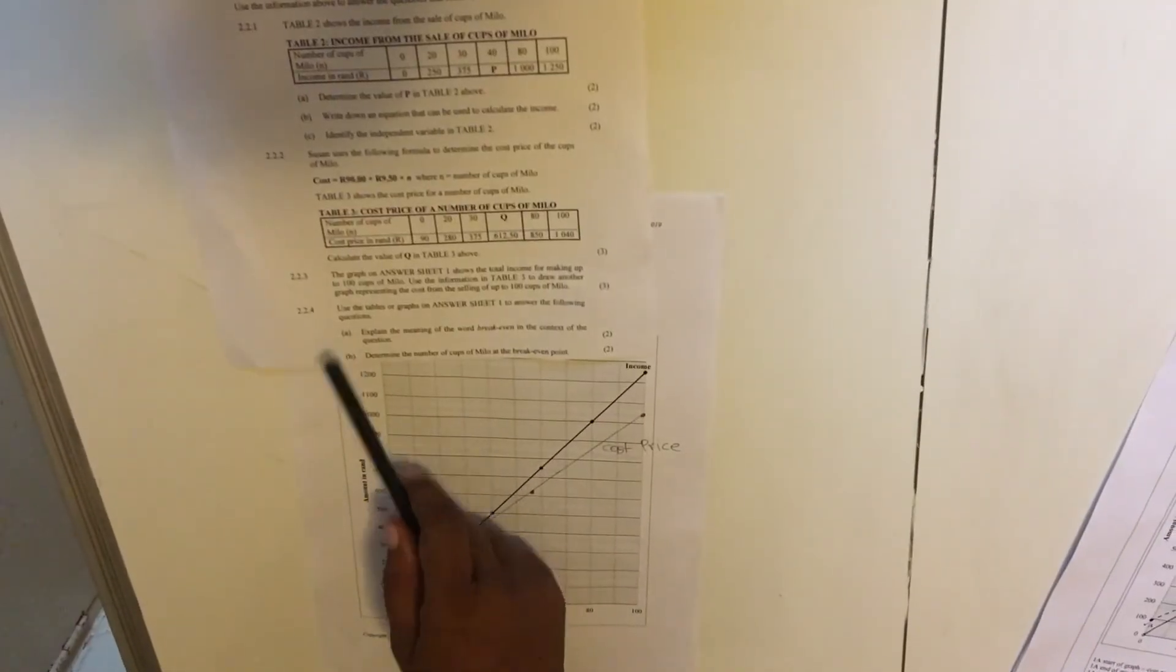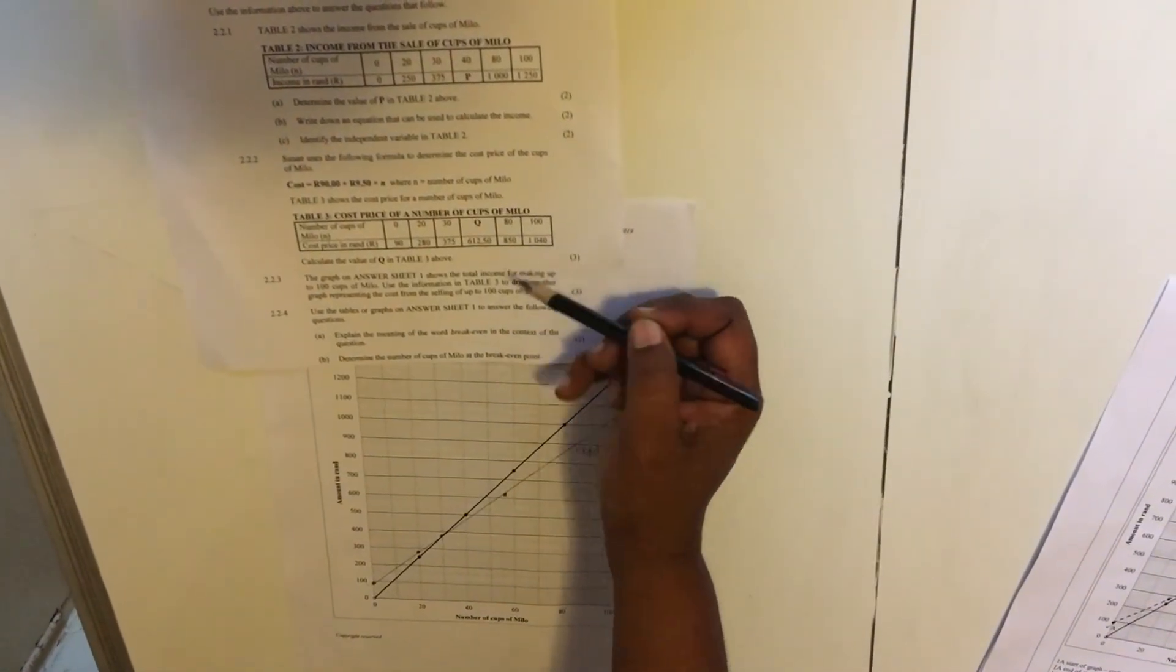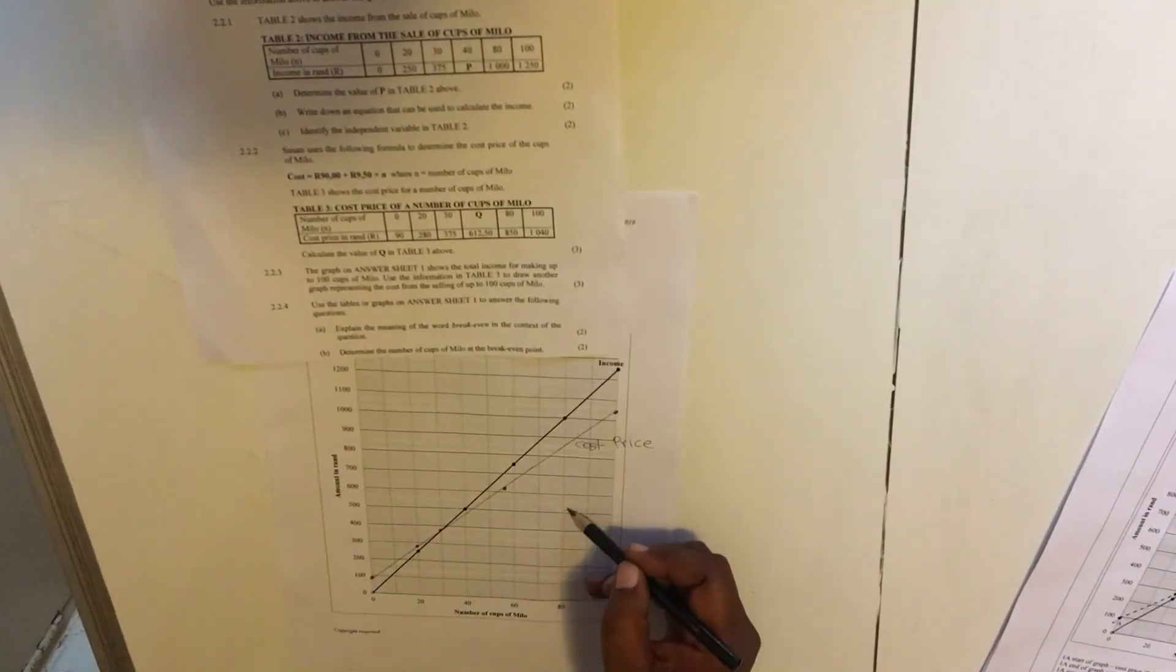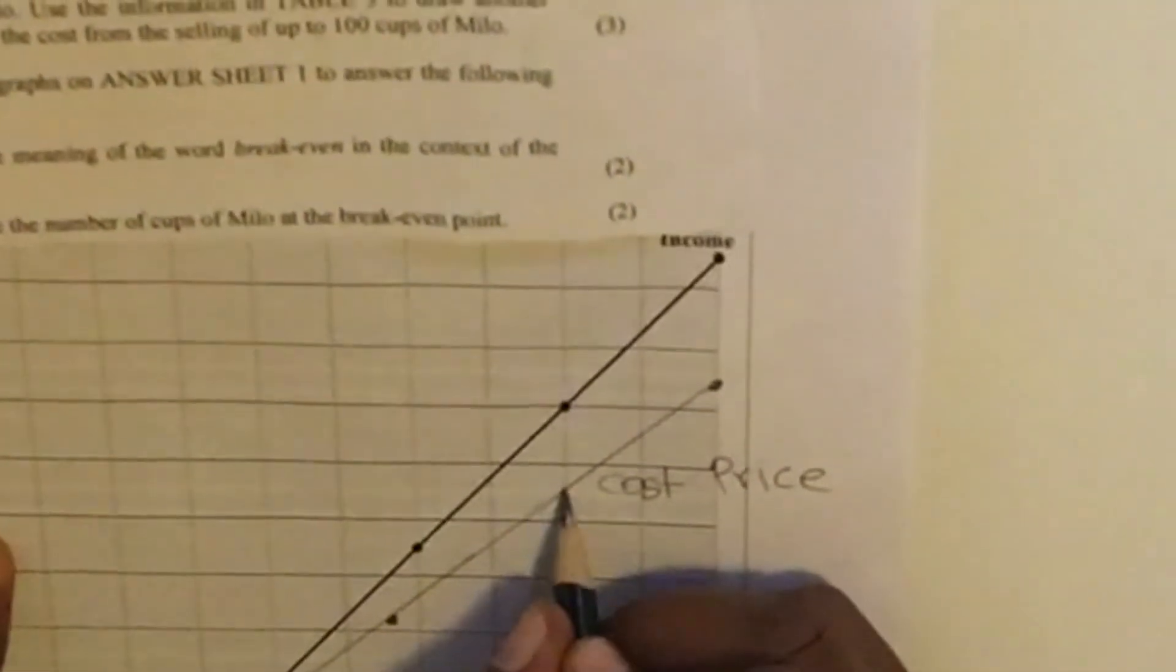Let's go to the next question. Now they ask us to use our graphs. Oh, I made a mistake with our graphs. I didn't write this point where it's 80 and R850. Let's fix that. When it's 80, it's R850. So here is our 800, R850 will be there. Right.